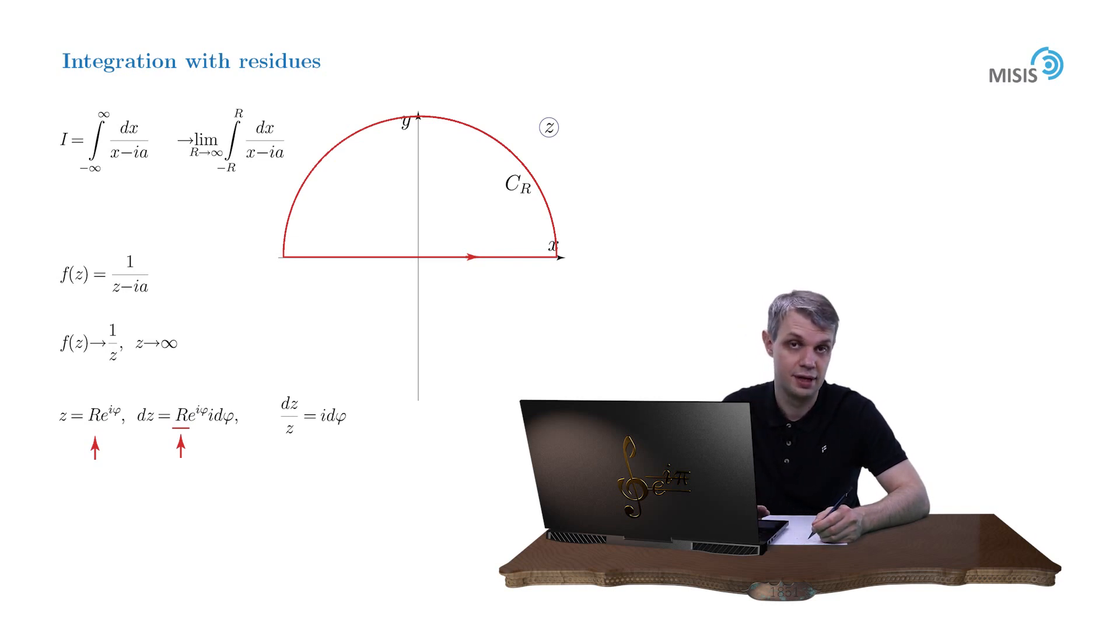But fortunately for us now, it doesn't cause any problems because we can compute the integral from 0 to pi. So our arc integral is in fact simply i pi. And the closed-contour integral is now reduced to our original integral plus i pi.